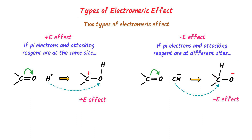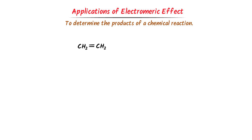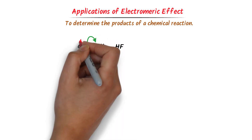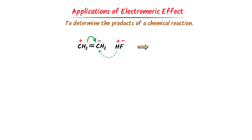Finally, let me teach you the application of electromeric effect. Electromeric effect helps us determine the product of any chemical reaction. For example, consider a reaction where the compound contains a double bond with pi electrons. These pi electrons shift to one carbon, creating opposite charges on each carbon. Hydrogen fluoride contains two attacking reagents: hydrogen is a positive attacking reagent and fluorine is a negative attacking reagent. The positive hydrogen attacks the negative carbon, and the negative fluorine attacks the positive carbon. As a result, we get this organic compound.